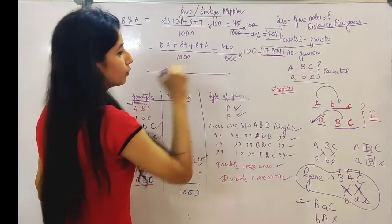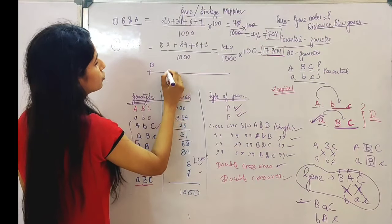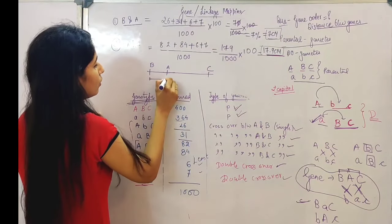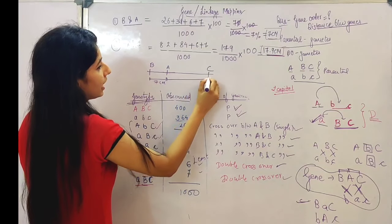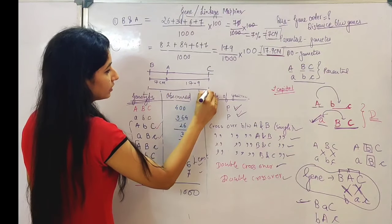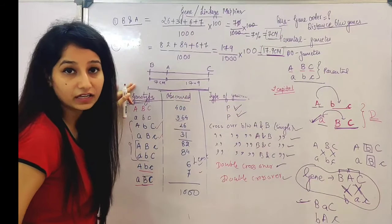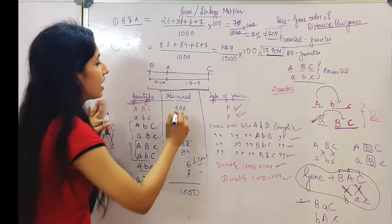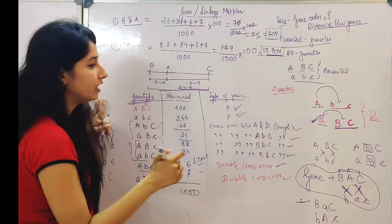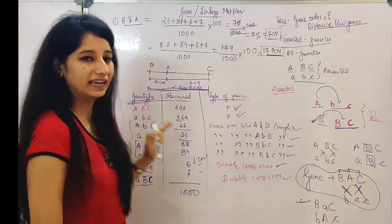So if I draw the genetic map: B — then A (7 centimorgan apart) — then C (17.9 centimorgan from A). The total distance from B to C is 7 + 17.9 = 24.9 centimorgan. This type of three-point cross question is commonly asked in CSIR exams.